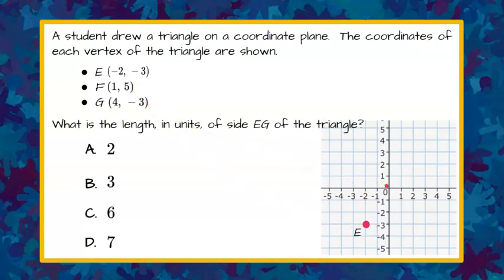F is going to be to the right 1 because it's positive 1, and up 5 because it's positive 5. There's our point F, and we're going to connect them because we're making a triangle.